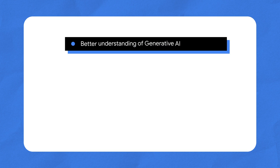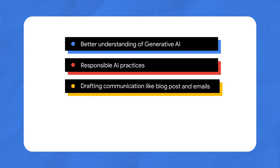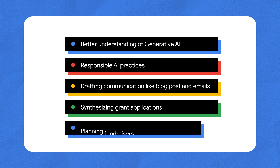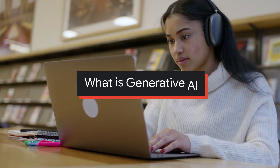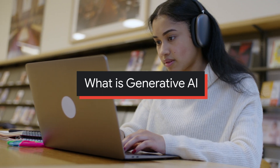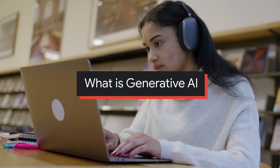After watching this video, you'll have a better understanding of generative AI and responsible AI practices, and be able to use Gemini to do everything from drafting communications like blog posts and emails to synthesizing grant applications and planning fundraisers. Let's start with some background information on generative AI to give you more context about the technology and its opportunities for your organization.